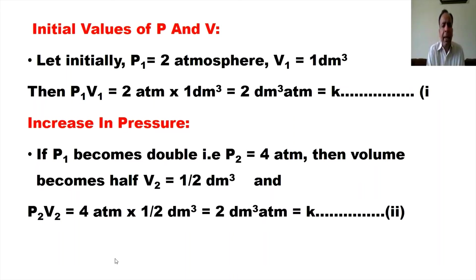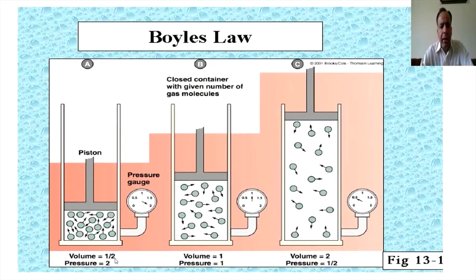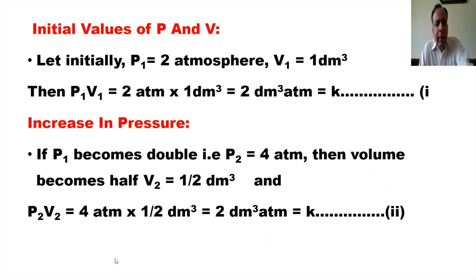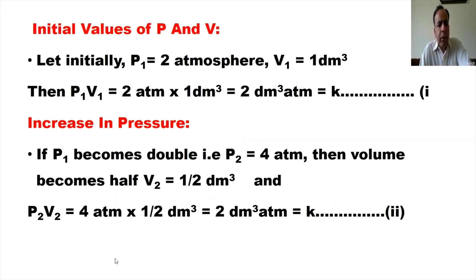We suppose the initial values: P1 is equal to 2 atm and V1 is 1 dm³. Putting these values, the answer is 2 cubic decimeter·atm. Now if we double the gas pressure to 4 atm, the volume becomes one-half. Putting these values, the answer is again 2.